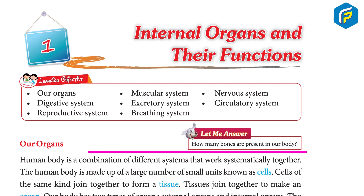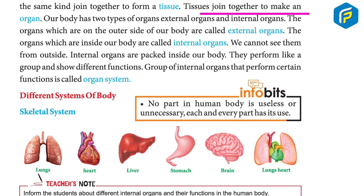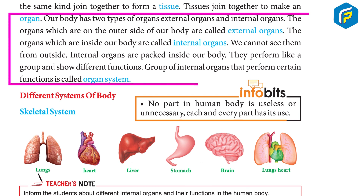The human body is a combination of different systems that work systematically together. The human body is made up of a large number of small units known as cells. Cells of the same kind join together to form a tissue. Tissues joined together make an organ.